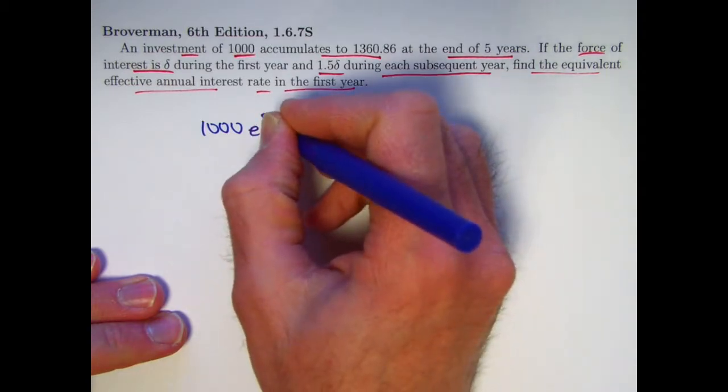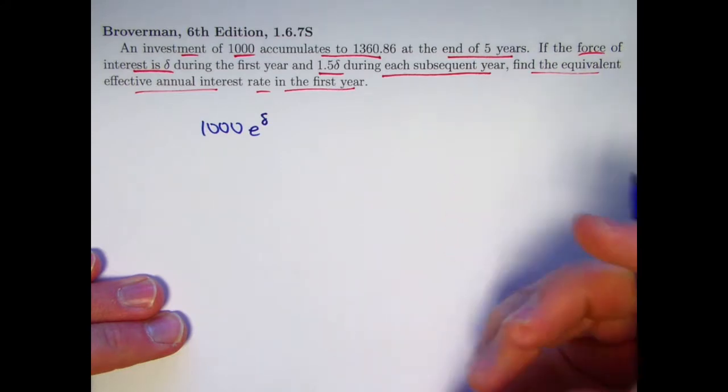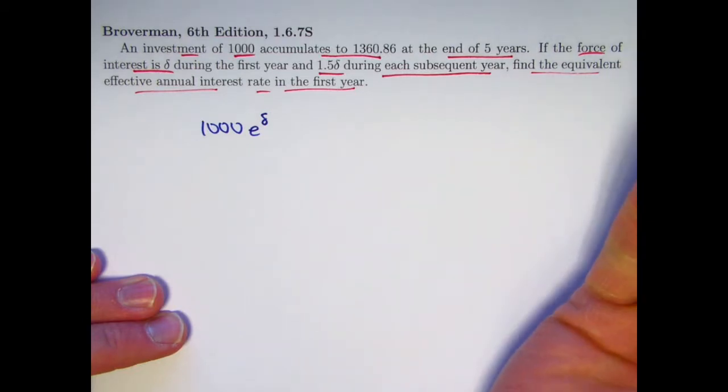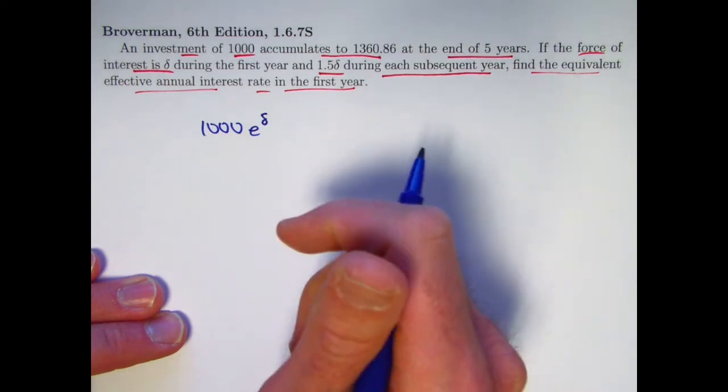The growth factor will be e to the delta when the force of interest is delta constant. E to that delta power is the growth factor. It's equal to 1 plus i. When you multiply it by a thousand, that will be the future value of a thousand after one year.